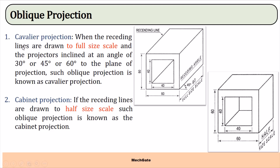There are various types of oblique projection. In cavalier projection, the residing lines are drawn to the full size scale and the projectors are inclined at an angle of 30, 45, or 60 degrees to the plane of projection. In cabinet projection, the residing lines are drawn to the half size scale — such an oblique projection is known as cabinet projection.